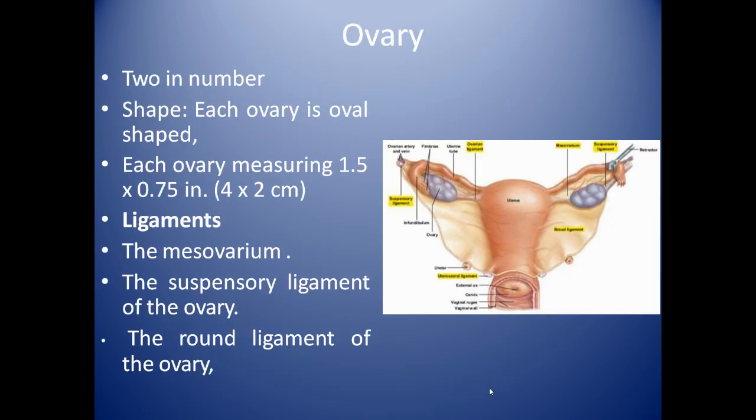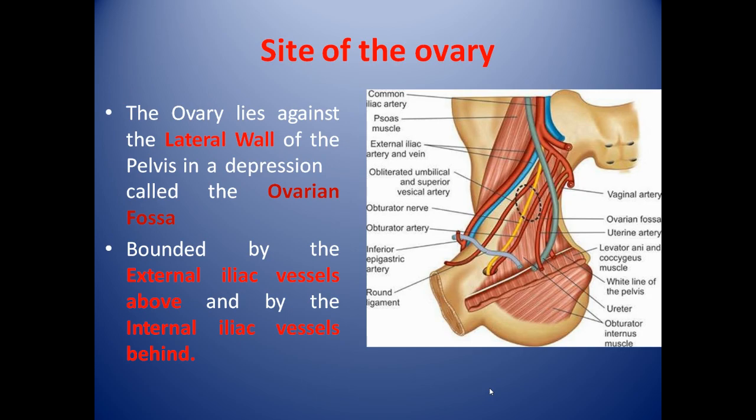Now we will study the anatomy of the ovary. The ovaries are two in number; each is oval in shape, measuring 1.5 by 0.5 inches. Ligaments include the meso-ovarium, suspensory ligament of the ovary, and round ligament of the ovary. The ovary lies against the lateral wall of the pelvis in a depression called the ovarian fossa, bounded by the external iliac vessels above and the internal iliac vessels behind.